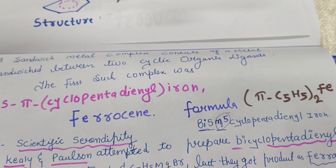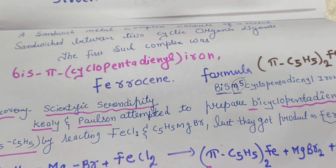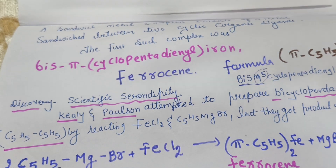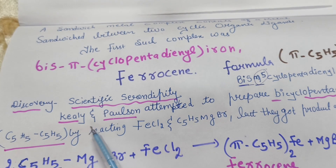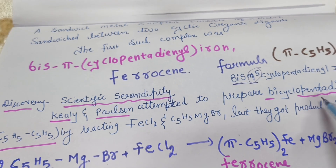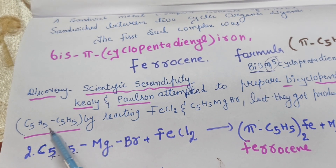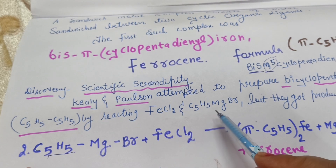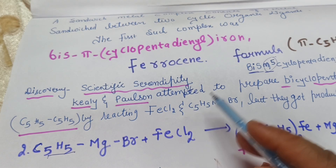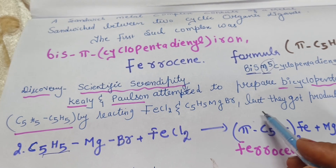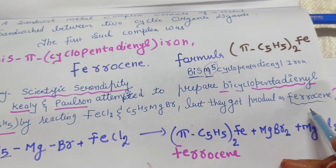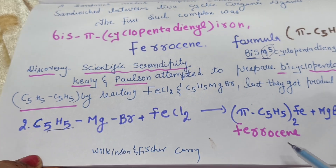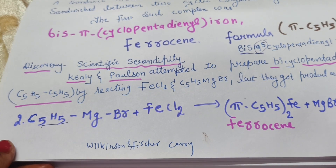Ferrocene was discovered by scientific serendipity — it was an accidental discovery. Keele and Pauson attempted to prepare dicyclopentadienyl by reacting ferrous chloride (FeCl₂) with a Grignard reagent, cyclopentadienyl magnesium bromide. They were trying to prepare C5H5-C5H5 but instead obtained ferrocene, the sandwich compound. This accidental synthesis is also considered one of the preparation methods of ferrocene.